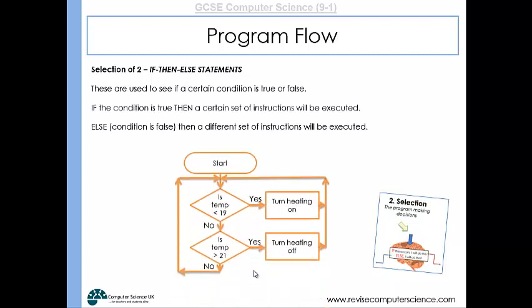Here's an example of a central heating program. We've got two if-statements. First, if the temperature is less than 19, we turn the heating on, or we proceed to another if-statement. If the temperature is greater than 21, we turn the heating off, or we proceed back to the start.